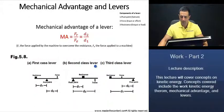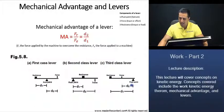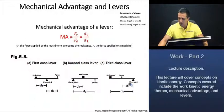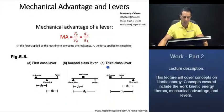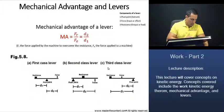Third class levers have the force between the resistance and the pivot point. Since the resistance is farther from the pivot point than the force, D1 is larger than D2. Going back to our equation, if D1 is larger than D2, then the mechanical advantage for third class levers is going to be less than 1.